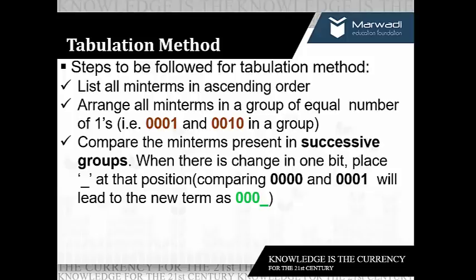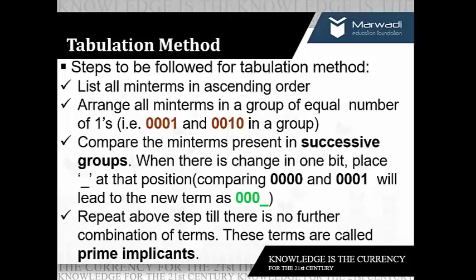The next step is to compare successive groups. Whenever we find a change in only one bit, we place a dash sign at that position. For example, on comparing 0000 and 0001 we find the change in the LSB bit, so the new term would be 000-. The fourth step is to repeat step three and continue combining successive groups until we obtain prime implicants.